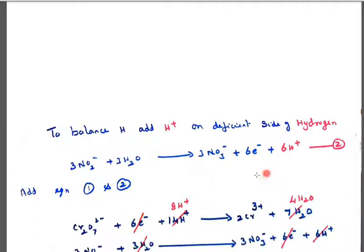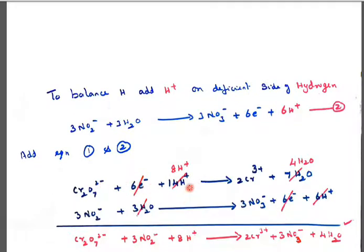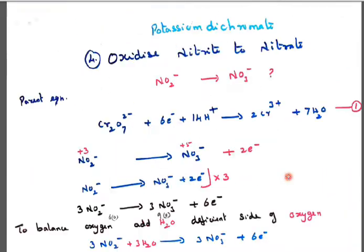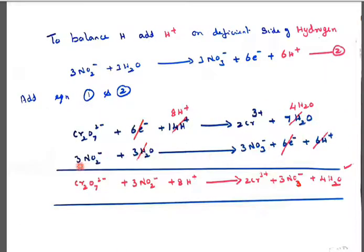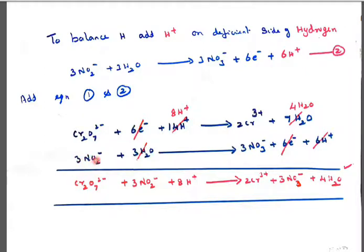Adding the first and second equations: Cr₂O₇²⁻ + 6e⁻ + 14H⁺ → 2Cr³⁺ + 7H₂O, and 3NO₂⁻ + 3H₂O → 3NO₃⁻ + 6e⁻ + 6H⁺. The 6 electrons cancel. Then 3H₂O product-side and 7H₂O cancel, leaving 4H₂O. Then 14H⁺ and 6H⁺ cancel, leaving 8H⁺. Final balanced equation: Cr₂O₇²⁻ + 3NO₂⁻ + 8H⁺ → 2Cr³⁺ + 3NO₃⁻ + 4H₂O. It is completely balanced. Thanks for watching.